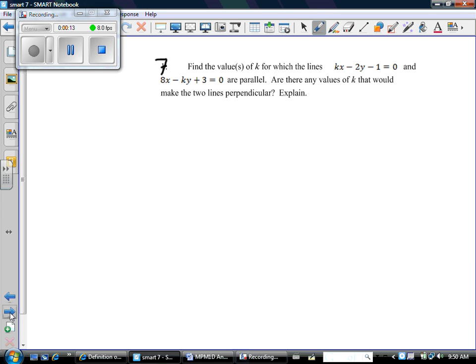So question 7 says, find the value or values of k for which the lines kx - 2y - 1 = 0 and 8x - ky + 3 = 0 are parallel. Are there any values of k that would make them perpendicular? Explain. So we know parallel means same slope. So this is a question about slope. Let's call this line 1, we'll call this line 2, and let's try to find the slope of both those lines.